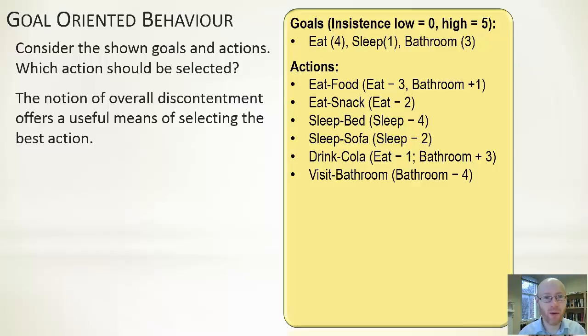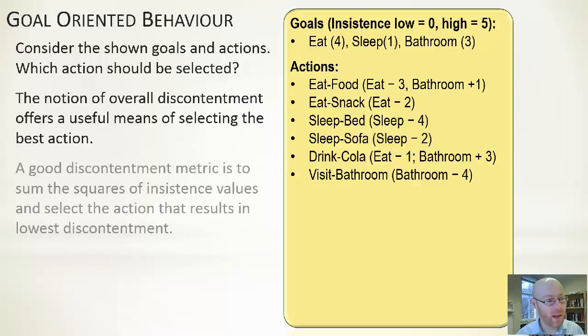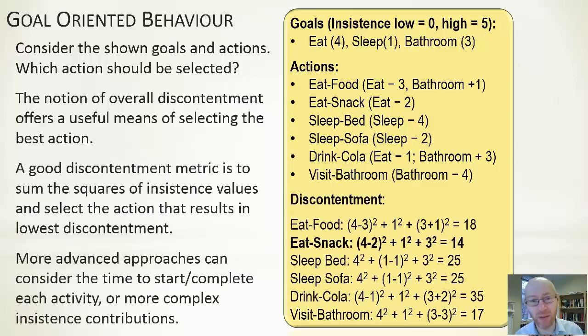Different ways of doing this. One good way to think about is in terms of overall discontentment. So it's not to look at how happy the character is, but how unhappy the character is. A good discontentment metric to use is to take each of your goals, the insistent values, to square them. So it'd be four squared, one squared, and three squared. And then to add together the sum of all of those values.